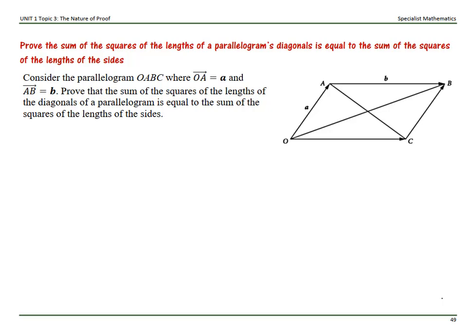This video uses vectors to prove that the sum of the squares of the lengths of a parallelogram's diagonals is equal to the sum of the squares of the lengths of the sides. Consider the parallelogram OABC where vector OA is represented by a and vector AB is represented by b. Prove that the sum of the squares of the lengths of the diagonals equals the sum of the squares of the lengths of the sides.